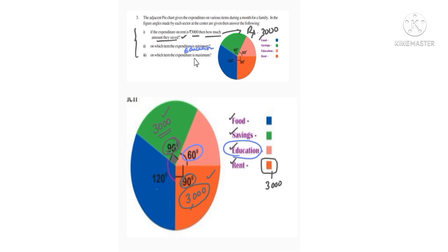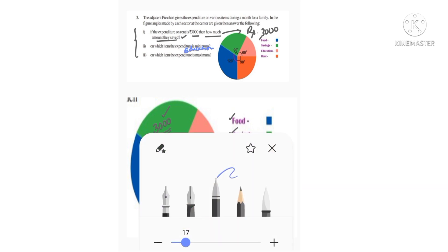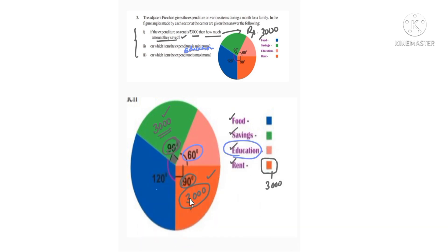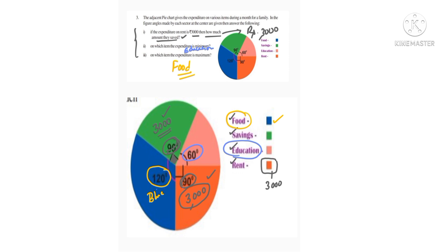On which item is the expenditure maximum? The maximum is the largest angle. The largest angle is 120 degrees, shown in blue color, which represents food. So food is the item on which maximum expenditure was made. Observe the pie chart and answer based on the angles given in each sector.